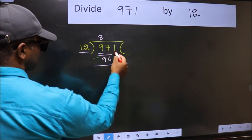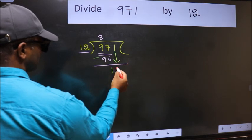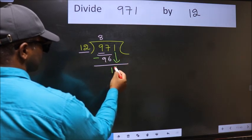After this, bring down the next number. So 1 comes down. After this step, the mistake happens.